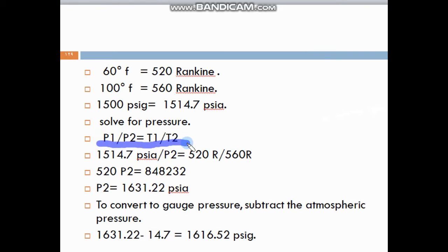We will write the second equation because it talks about pressure and temperature. P1 divided by P2. P1, we know it, it's 1514.7. P2, that's what we will find, equals 520 (this is T1) divided by T2, that's 560 Rankine. After the multiplication, we divide by 520, and we find that P2 is equal to 1631.22 PSIA.